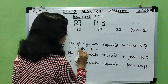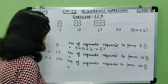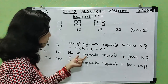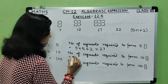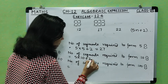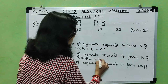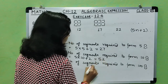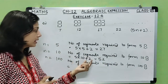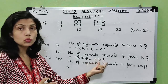For five 8s, n equals 5, so 5 into 5 plus 2 equals 25 plus 2 equals 27 segments. For ten 8s, n equals 10, so 5 into 10 plus 2 equals 50 plus 2 equals 52 segments. So if you form 10 eights, you need 52 segments.